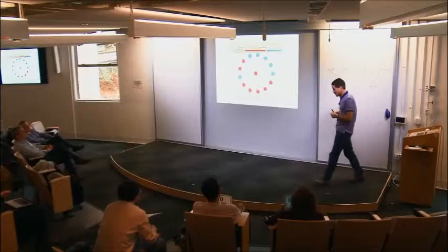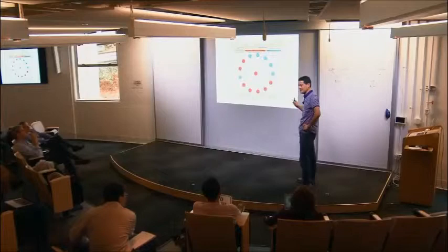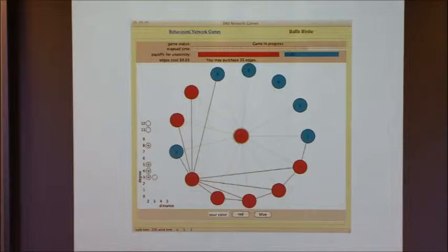We did a later set of experiments on a different set of subjects. Now the building of the network itself is part of the task. At the beginning of each one-minute experiment, the network consisted of 36 isolates — 36 vertices with no connections. As per the interface, anybody who wants to can at any time purchase an edge for, in this case, three cents, deducted from any earnings in the experiment.